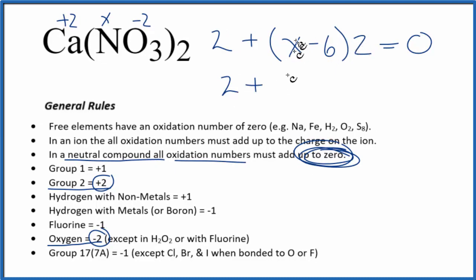2 plus 2 times x is 2x. 2 times minus 6 minus 12 equals zero. 2x minus 10 equals zero. 2x would equal 10, so x is going to equal a positive 5. So the oxidation number for the nitrogen here, that's going to be plus 5.